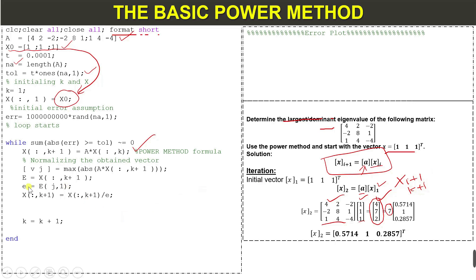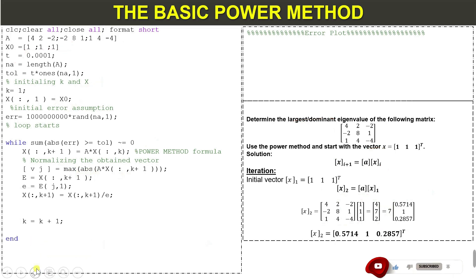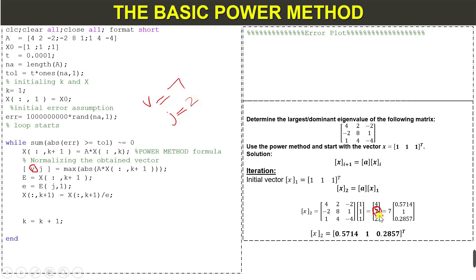Then we obtain the largest eigenvalue — e equals e of j, comma 1. Here j indicates the position of the largest value in the vector. For example, here the largest value is at the second position of the vector, and j will indicate and show that position of the largest eigenvalue.